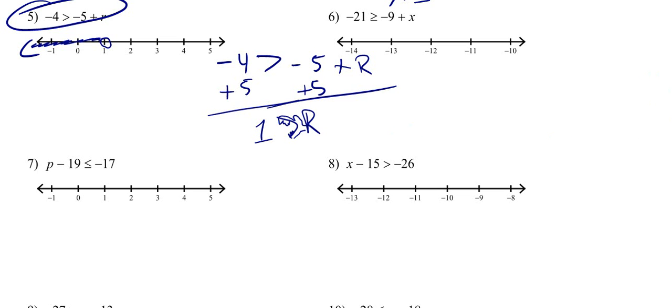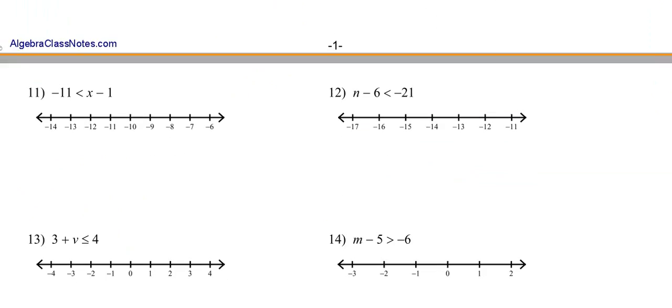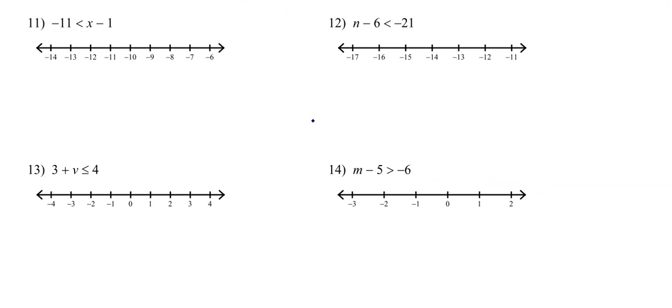Looks like we've got time for just one more example. So, you know, they all look about the same, don't they? Let's do 11 because we've got a negative 11 is less than x minus 1. I'm just going to solve for x. So I'm going to add 1 to both sides. Negative 11 plus 1 is a negative 10. And what we know about x, we know x is going to be bigger than negative 10. So we're going to shade in to the right.